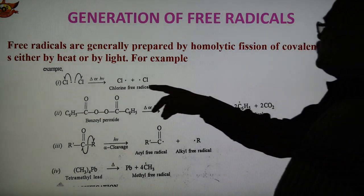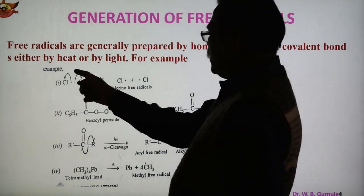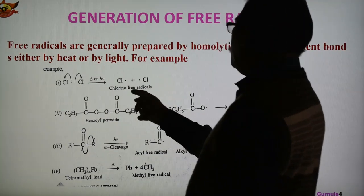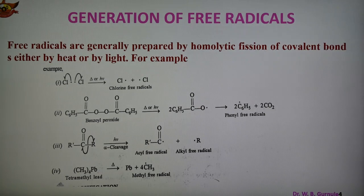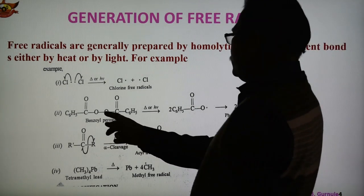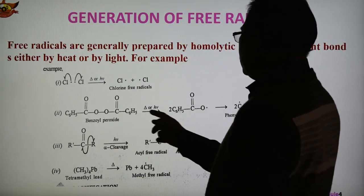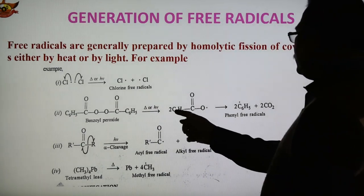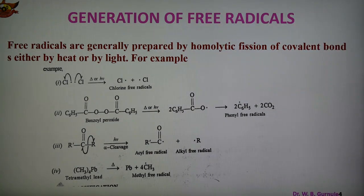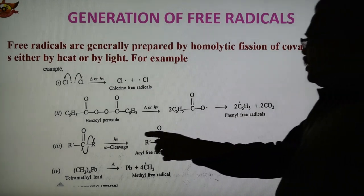Four examples are shown here. First example: this is a Chlorine molecule, and this is the shared electron pair. After homolytic fission we get the Chlorine free radical. Another example is Benzoyl peroxide — this is the peroxide linkage — and after this breakage in the presence of heat or light we obtain the Phenyl free radical.